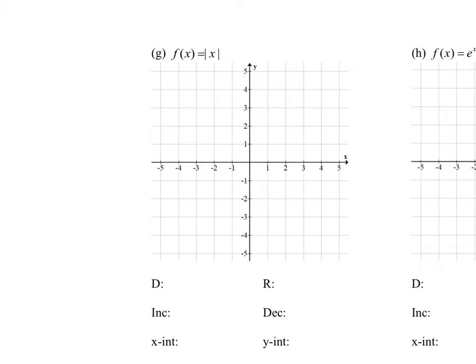An absolute value function is really two separate functions. This is called a piecewise defined function. You have two cases: if x is greater than or equal to 0, it keeps that exact same value — absolute value of 2 is 2. But if x is less than 0, a negative number, it returns the opposite. So how do you return the opposite? The opposite would be negative x. This is the absolute value of x as a piecewise defined function.